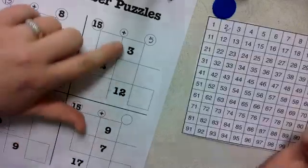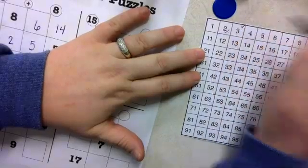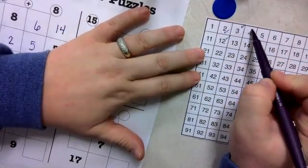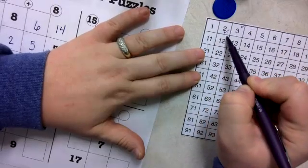3 plus something is 12. So 3, and I need to stop at 12. So, 3, 1, 2, 3, 4, 5, 6, 7, 8, 9.